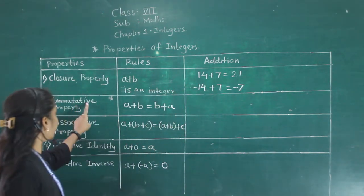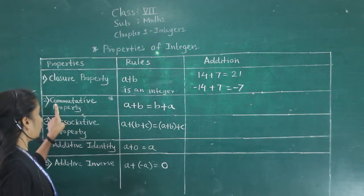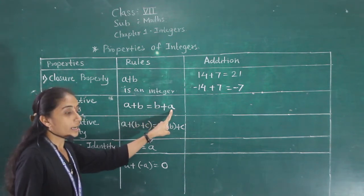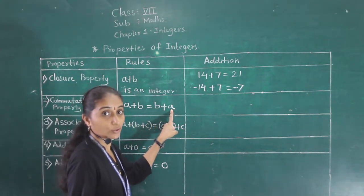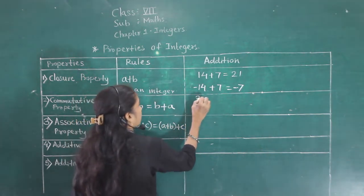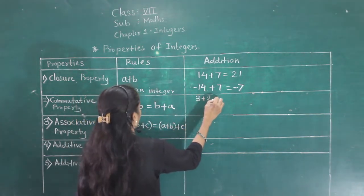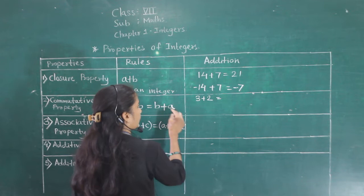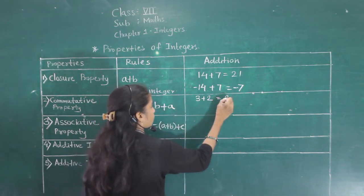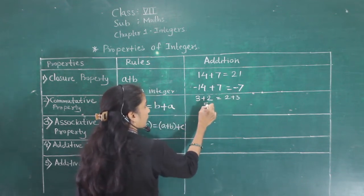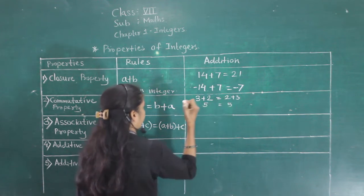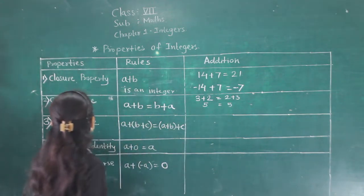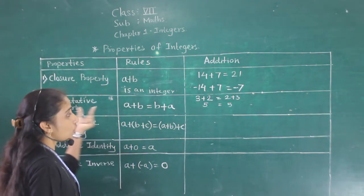Next property: commutative property. A plus B is equal to B plus A. First we will see this works in whole numbers. For example, A is 3 and B is 2, so A plus B is 3 plus 2, which equals 5. B plus A is 2 plus 3, which also equals 5. We have already learned this as the commutative property in whole numbers.